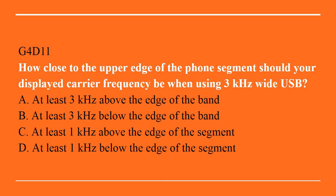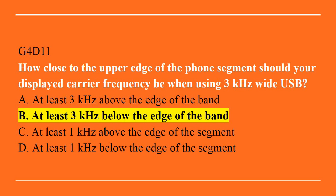G4D11: How close to the upper edge of the phone segment should your displayed carrier frequency be when using 3 kHz wide upper sideband? A. At least 3 kHz above the edge of the band. B. At least 3 kHz below the edge of the band. C. At least 1 kHz above the edge of the segment. Or D. At least 1 kHz below the edge of the segment. The correct answer is B. At least 3 kHz below the edge of the band.